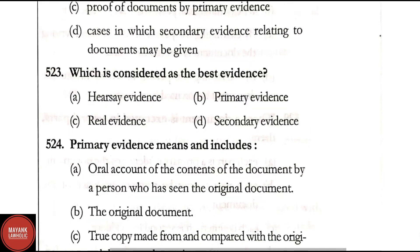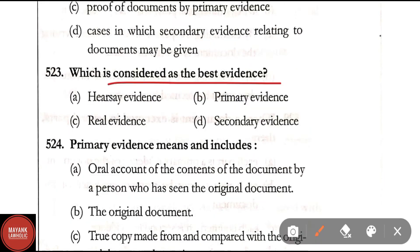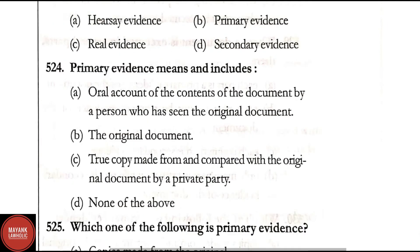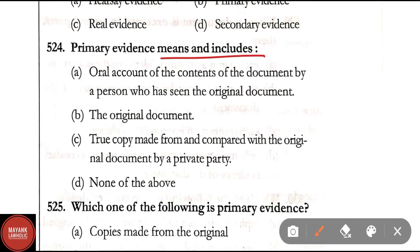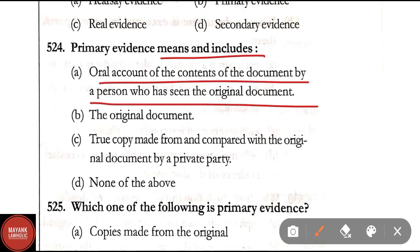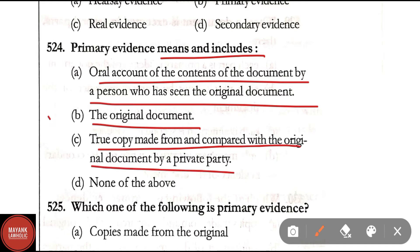Question 523: Which is considered the best evidence — hearsay evidence, primary evidence, real evidence, or secondary evidence? Correct answer is Option B — primary evidence is considered to be the best evidence. Question 524: Primary evidence means and includes — oral accounts of the contents of a document by a person who has seen the original; the original document; a true copy made from and compared with the original by a private party; none of the above. Correct answer is Option B — the original document.